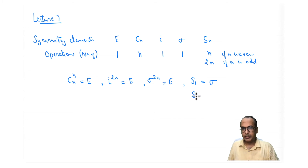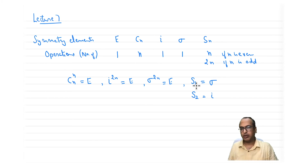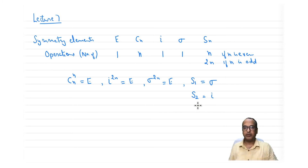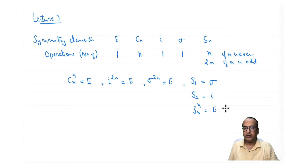S2 is nothing but i, so you actually need n equal to 3 or higher for a distinct Sn to exist. If n equals 1, S1 becomes sigma; if n equals 2, S2 becomes i — try to work that out yourself. Also, Sn to the power n equals E for n even, and Sn to the power 2n equals E for n odd.